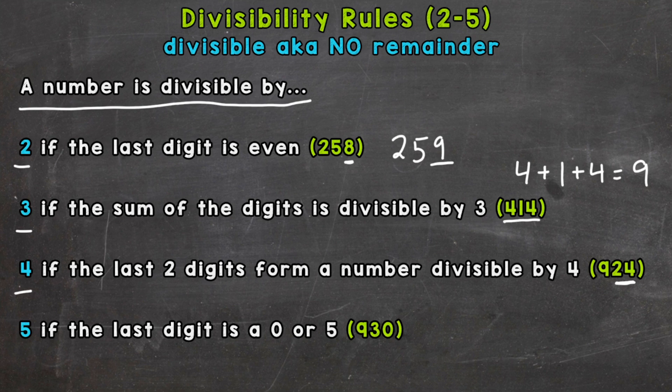And lastly, 5 — if the last digit is a 0 or a 5. If a number ends in a 0 or 5, it's divisible by 5. So obviously here, 930 ends in a 0, so it is divisible by 5.